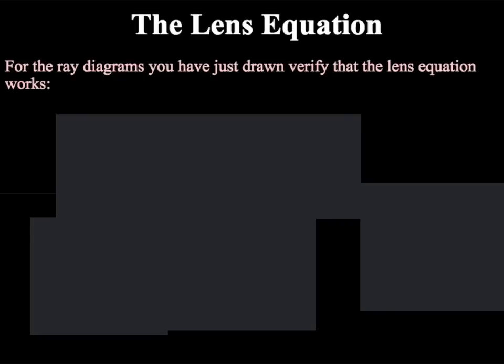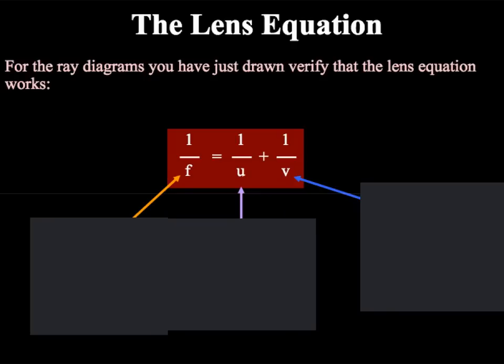All of these lens diagrams can be used to verify the lens equation. The lens equation is an equation that you are given on the front of your P3 paper and looks as below. It reads that 1 over F equals 1 over U plus 1 over V.